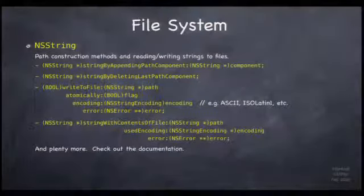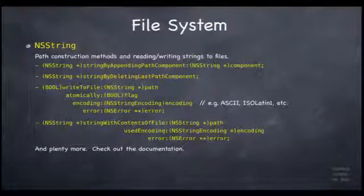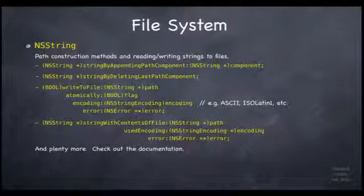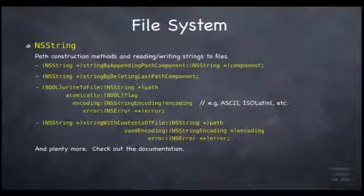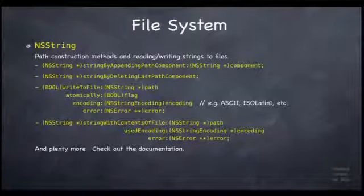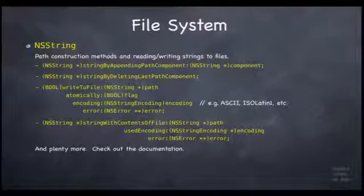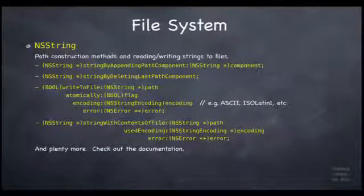NSString is an important part of file management because it has many methods for managing file paths — like stringByAppendingPathComponent — which ensures you're not manually concatenating slashes. You should use these methods to build paths rather than string concatenation, because the slash separator is file-system-dependent. There's probably a dozen path-construction methods in NSString worth checking out.